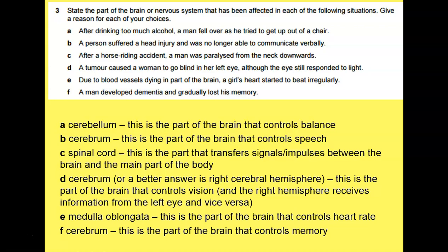A man developed dementia and gradually lost his memory. That's going to be the cerebrum, which is the part of the brain that controls memory.